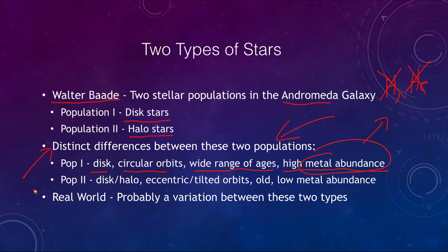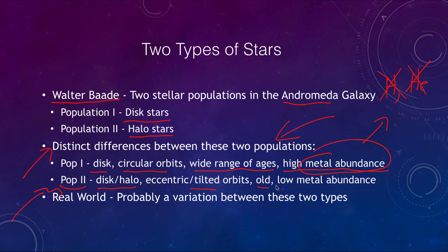Population two stars are found in the disk and the halo. They have eccentric or tilted orbits, they tend to be all very old — so not a wide range of ages — and they have a very low metal abundance; they are almost all hydrogen and helium.